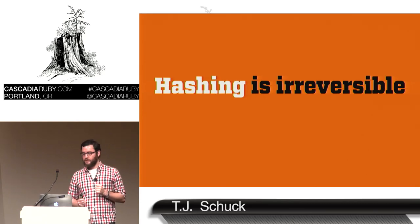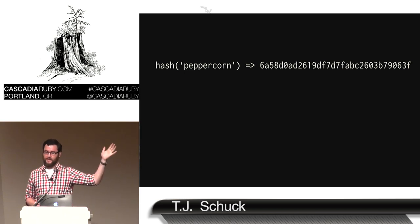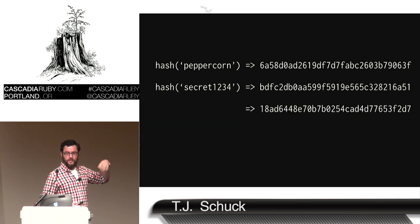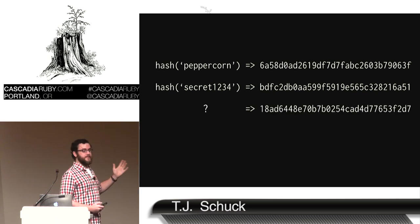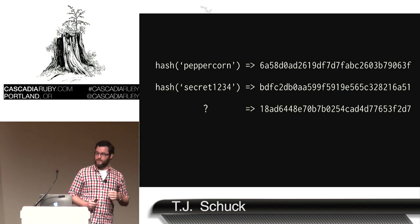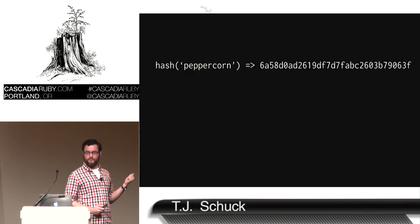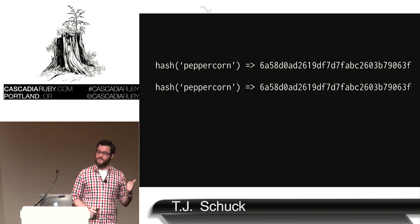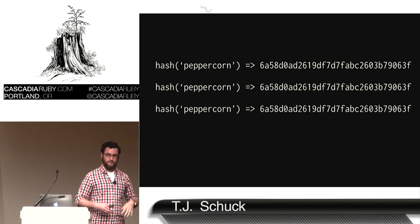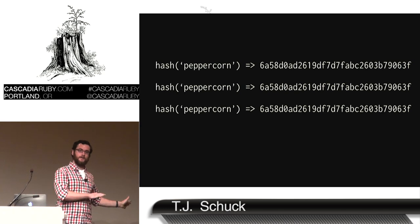Hashing is irreversible. If you have 'peppercorn' and apply a hash function, you get some output. If you have 'secret1234' and apply a hash function, you get some output. But if you have some output, you don't know what the input is, because hashing is irreversible — there is no inverse function. Additionally, hashing is deterministic, which is useful for authentication: when you hash peppercorn, you get an output, and when you hash it again, you get the same output. That's how you can do authentication — when the password comes in, you hash it, if the hashes match, you know the input was the same, but you can't back it out.